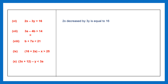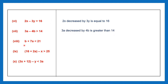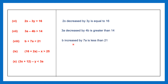Next one: 3a minus 4b is greater than 14. Or '3a decreased by 4b is greater than 14.' Next one: b plus 7a is less than 21. Or 'the sum of b and 7a is less than 21.' You can also write 'b increased by 7a is less than 21' — any one of these is acceptable.